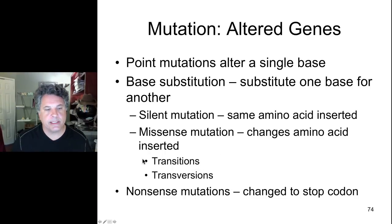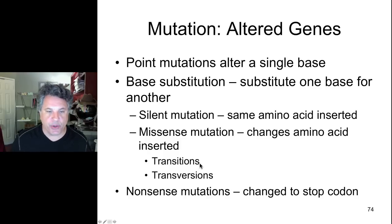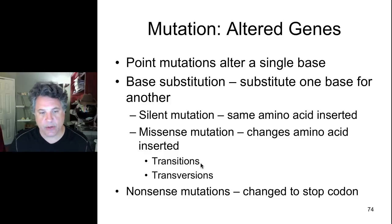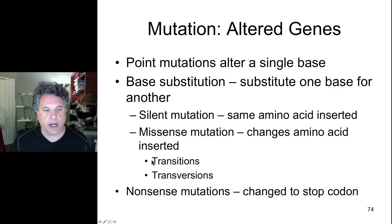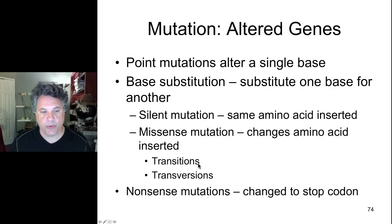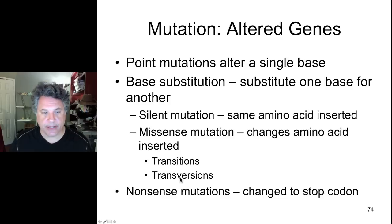Transitions are substitutions of one type of base for the same type of base — for example, a purine to a purine: an A to a G, or G to an A; or a C to a T or T to a C. Pyrimidines are changed from one pyrimidine to another. Transversions are changes that switch a base from a purine to a pyrimidine or vice versa — for example, an A to a T, or a C to a G.